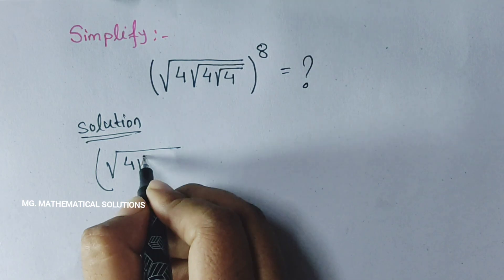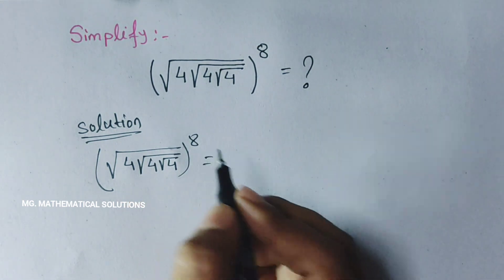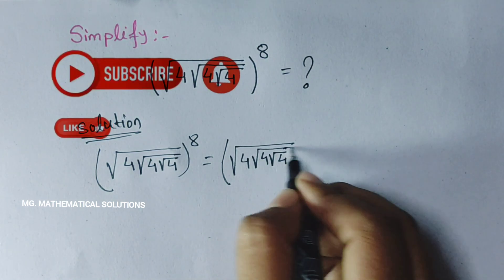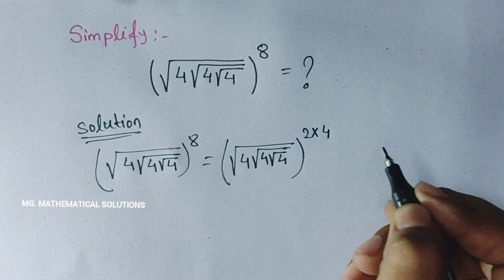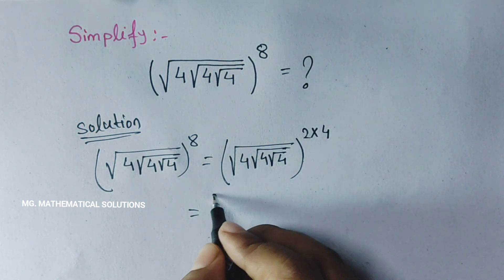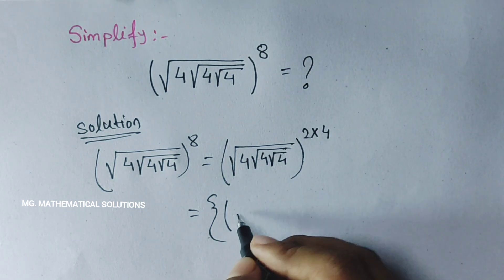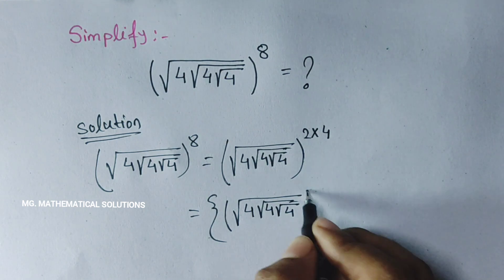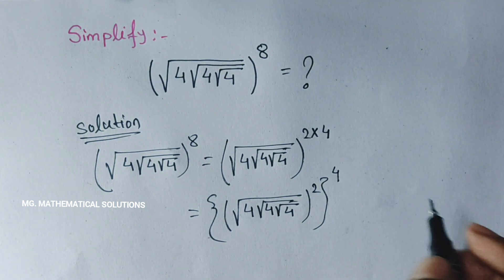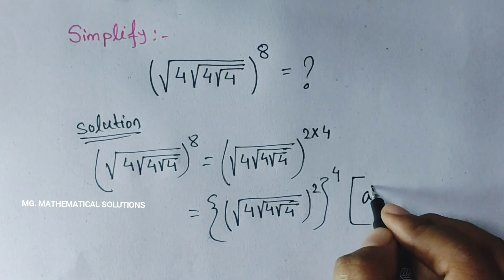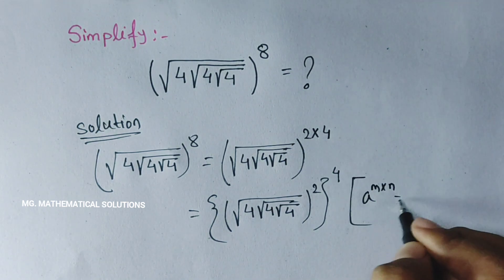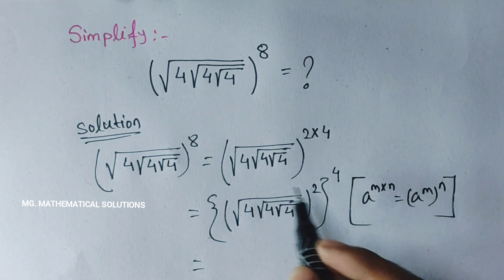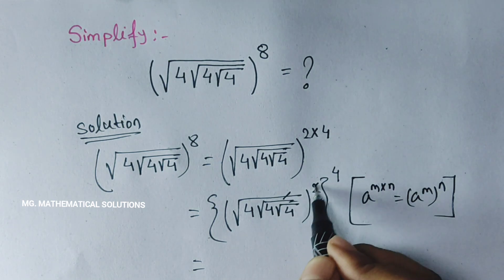Root under 4, root under 4, root under 4, whole to the power 8. We can write 8 as 2 times 4, equal to root under 4, root under 4, root under 4, whole to the power 2, whole to the power 4. Here we use the formula a to the power m times n equal to a to the power m, whole to the power n, and the square root is cancelled.